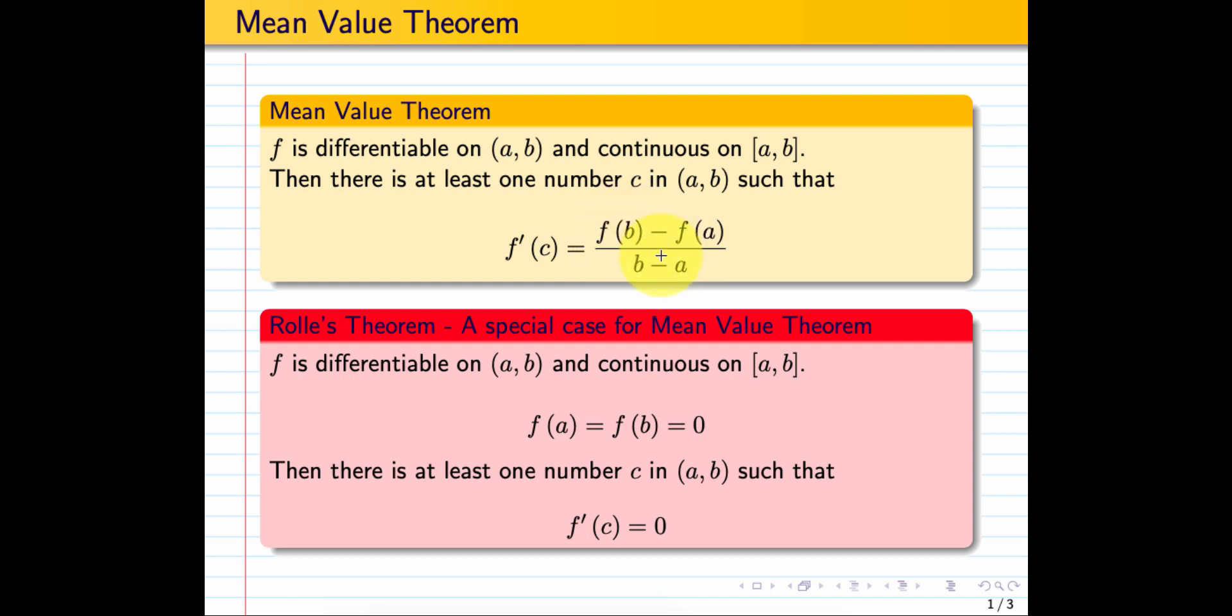Rolle's Theorem: If f is differentiable on (a, b) and continuous on [a, b], and if f(a) equals f(b) and equals 0, meaning that at a and at b the function crosses the x-axis, then there is at least one number c in (a, b) such that f'(c) equals 0, or such that the gradient is 0 at point c.